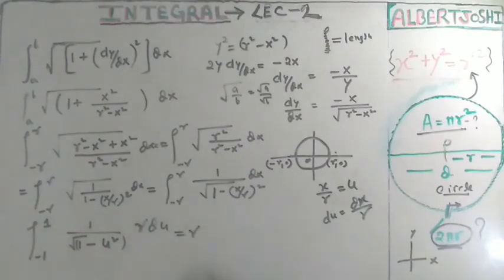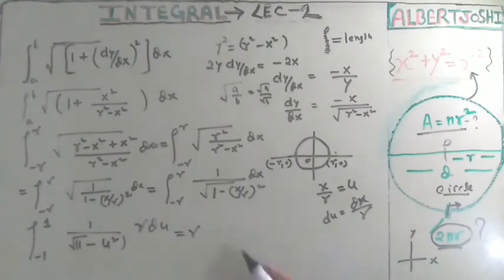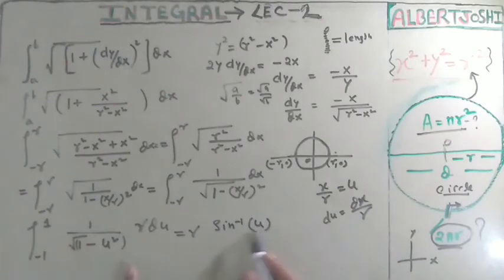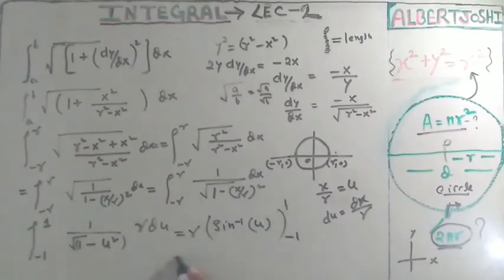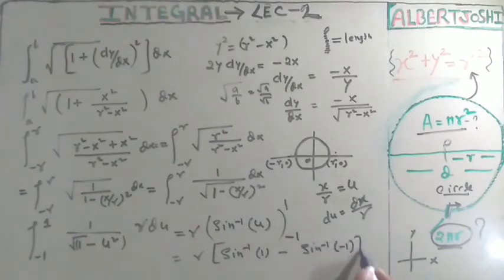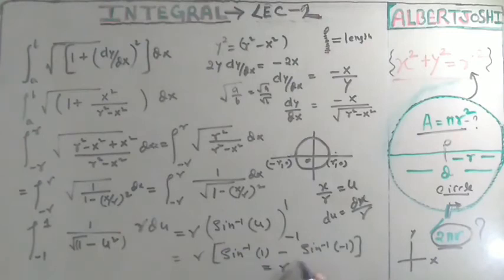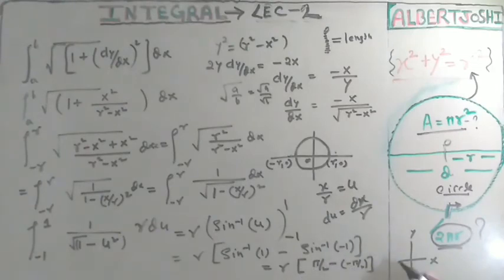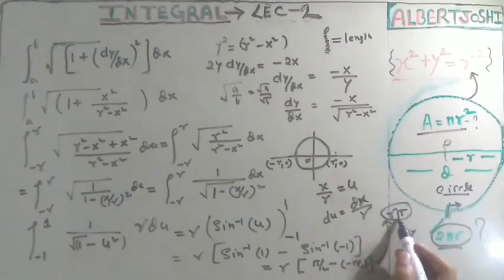Since r is constant, the integral becomes r·r times ∫ from −1 to 1 of 1/√(1−u²) du, which evaluates using sin⁻¹(u). Substituting the limits: sin⁻¹(1) − sin⁻¹(−1) = π/2 − (−π/2) = π. So the upper semicircle length equals r·π.